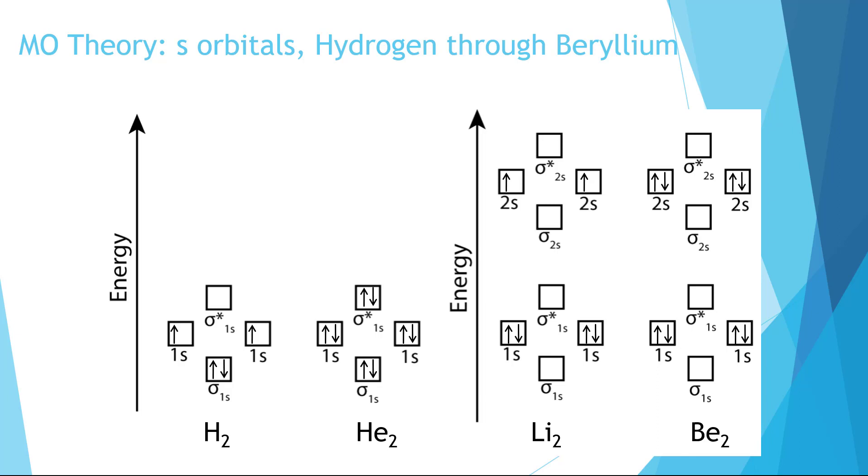I left the hydrogen and helium energy level diagrams up so that we can be reminded about what we've already done, but we're going to now do the exact same thing for lithium and beryllium. Now we'll have more electrons though. For lithium, we now can do the exact same thing for both the 1s and the 2s orbitals. Notice the 2s orbitals are situated above the 1s orbitals because they're higher in energy.